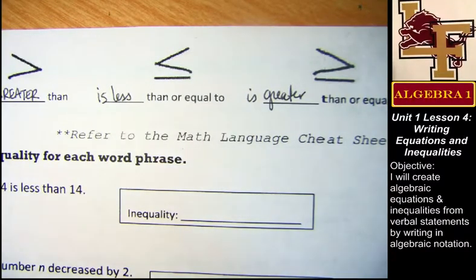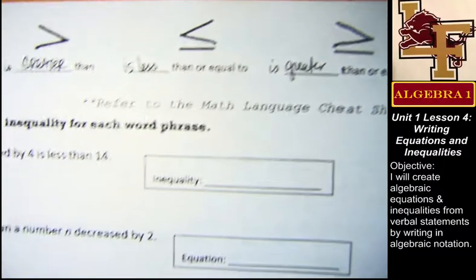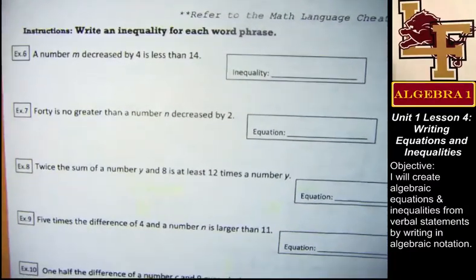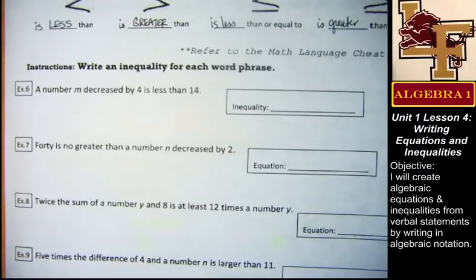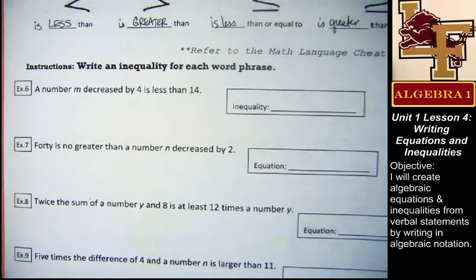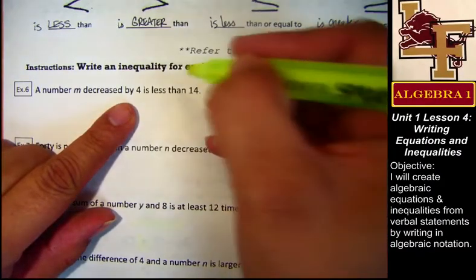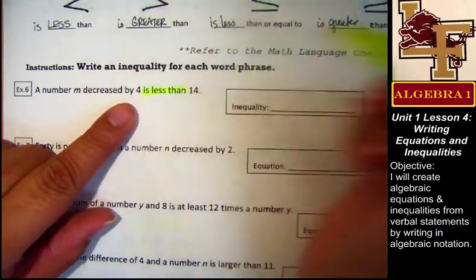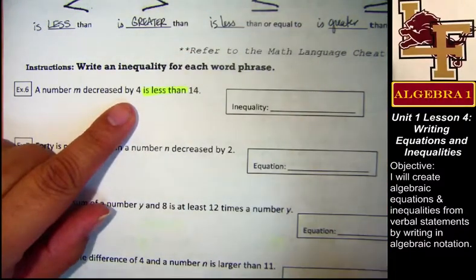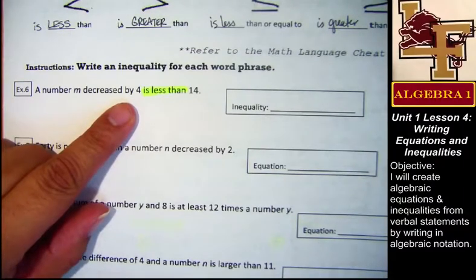Let's go ahead and use our math language cheat sheets or English to math dictionaries, and let's start figuring out how to translate these word phrases into math. First thing I'm going to do is I'm going to try to find those phrases that tell me this is an inequality. So I'm looking for is less than, is greater than, or words that mean that sort of thing. First example, I see is less than. I'm not going to write the symbol yet. I'm just highlighting or underlining if you're only using a pencil.